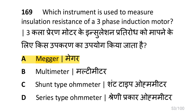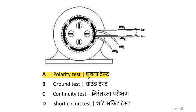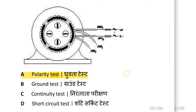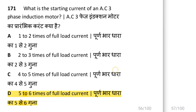The instrument used to measure insulation resistance of a three phase induction motor is a megger. The test illustrated in the winding is the polarity test. The starting current of an AC three phase induction motor is five to six times the full load current.